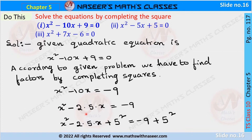In the LHS we do not have a complete square — we have the x² term and the 2ab term, but we do not have the b² term. So we need to add the b² term on both LHS and RHS. Here b is 5, so we add 5² on both sides.